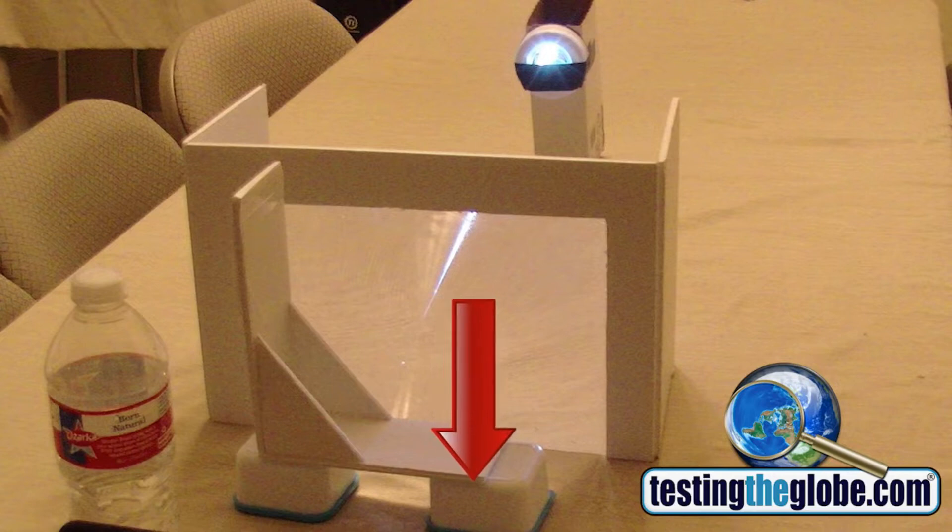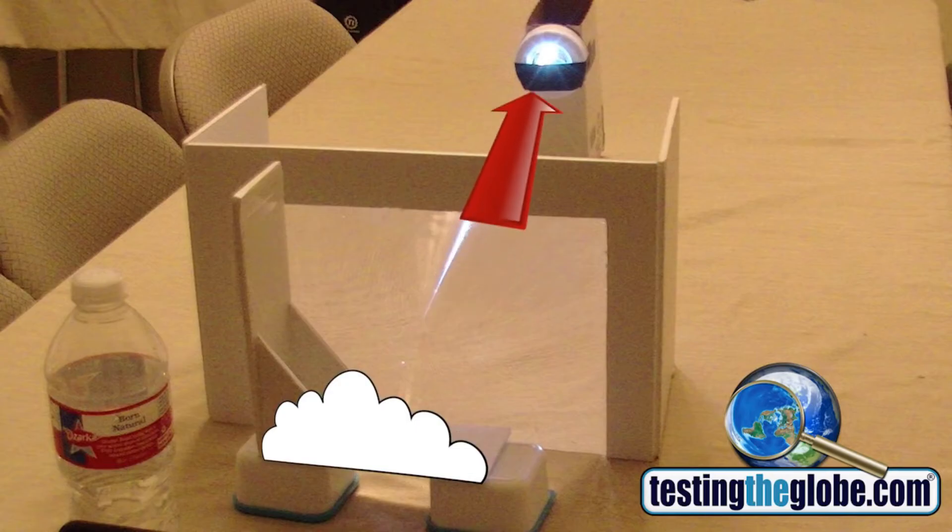Little stand here represents the bottom of the clouds, and so as you can see here the light is way above, you know it's well above what would be the bottom of the clouds in this example. So let's see what happens.